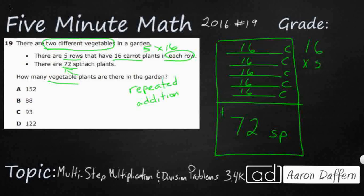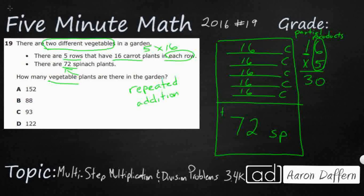I'm going to show you two different ways to do it. The first way is what we call partial products, which means we don't regroup — we just put each product down and then add them at the bottom. So we start with 5 times 6, which is 30, and put that down. Then we multiply 5 times the 1 in the tens place — but that 1 really isn't a 1, it's a 10. So I put a zero in the ones place of the second row to make sure I start in the tens place, and 5 times 1 is 5, giving us 50. So the answer is 80.